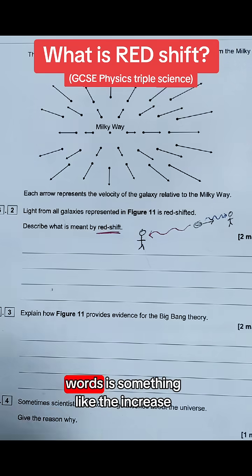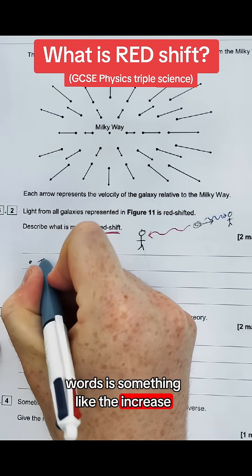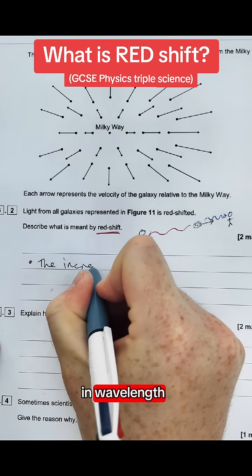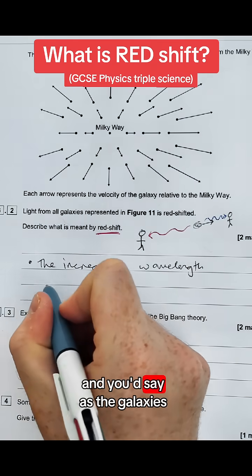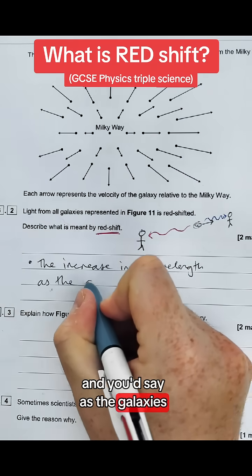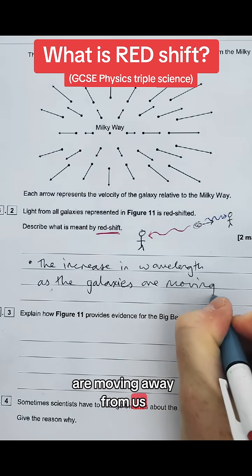So how we'd say that in words is something like: the increase in wavelength of light from these galaxies as the galaxies are moving away from us.